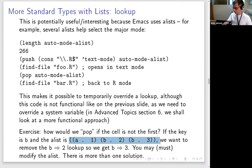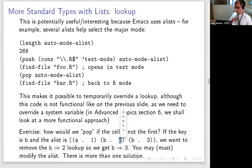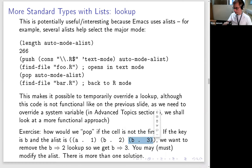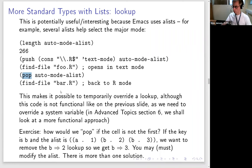Here's an exercise: given an A-list mapping A to 1, B to 2, and B to 3, looking up B returns 2 because the first entry is found. The question is: how would you remove the entry mapping B to 2 so that the entry mapping B to 3 is seen — if the pair is not necessarily the first pair in the A-list? There's more than one solution, so the more solutions you can think of, the more points you score.